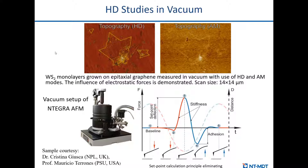In some cases, it's not possible to get good imaging in tapping mode, and using contact mode damages the sample — so the compromise is using hybrid mode. On this slide you can see the example of hybrid mode applied to tungsten disulfide monolayers in vacuum conditions. Our AFM can be operated not only in ambient conditions but in controlled gas atmosphere and also in low vacuum down to 10⁻³–10⁻⁴ torr. In this particular case, the topography was very blurry because of huge surface potential of the sample, and contact mode was cutting these flakes. The only way to get the image in vacuum was to use the hybrid mode.